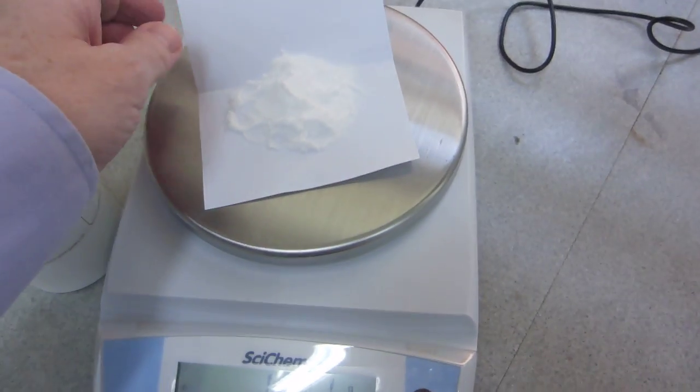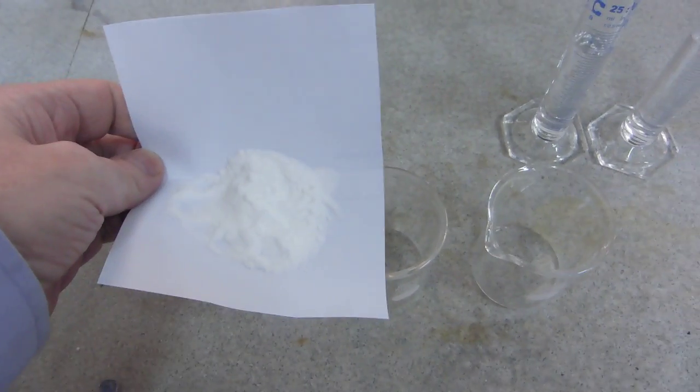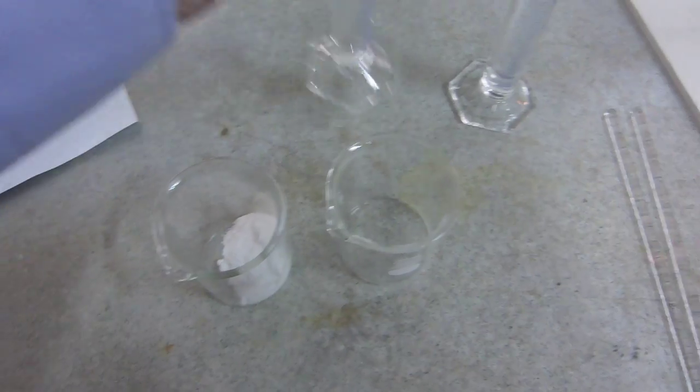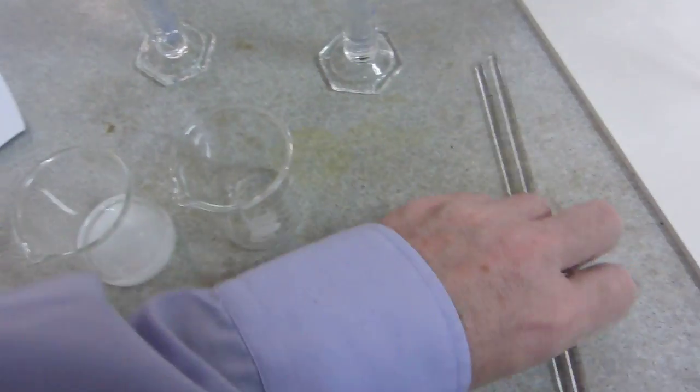So if we now take 10 grams of glucose, introduce it into one of the beakers, add 20 centimeters cubed of cold water and then stir.